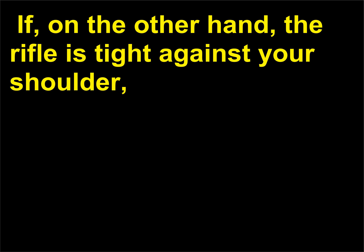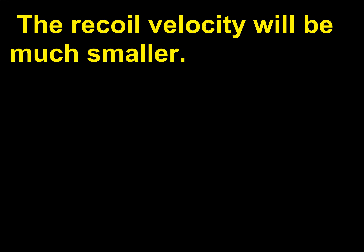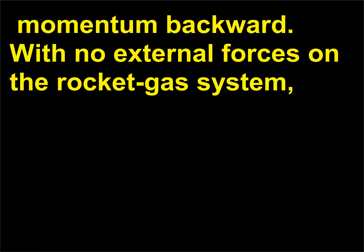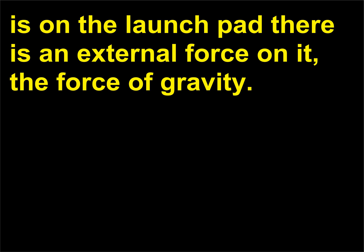If the rifle is held tight against your shoulder, the mass is the mass of the rifle and your body combined, and the recoil velocity will be much smaller. With no external forces on the rocket-gas system, the rocket's momentum must increase in the forward direction — it will speed up. When the rocket is on the launch pad, there is an external force on it: the force of gravity.